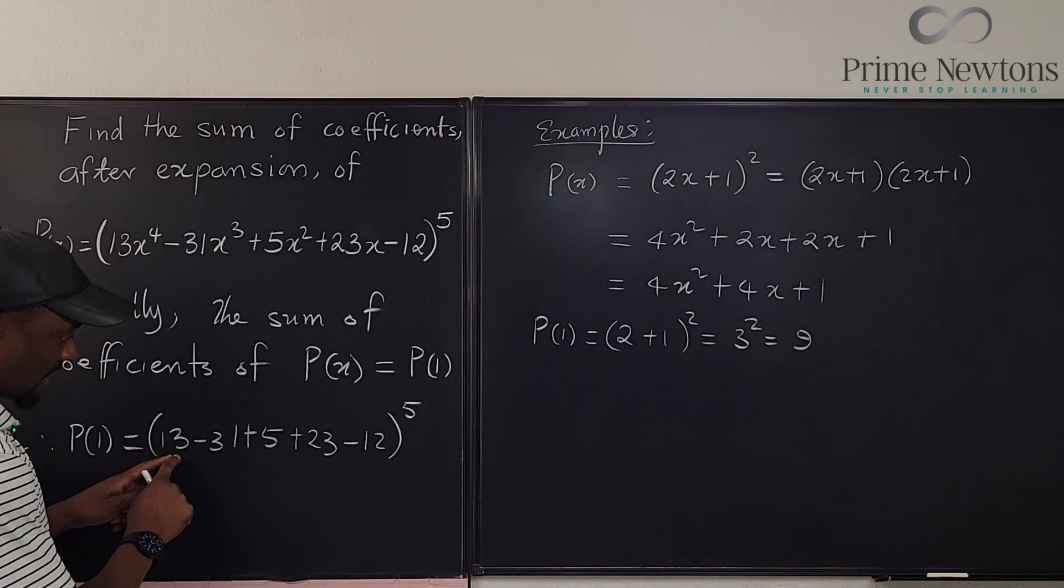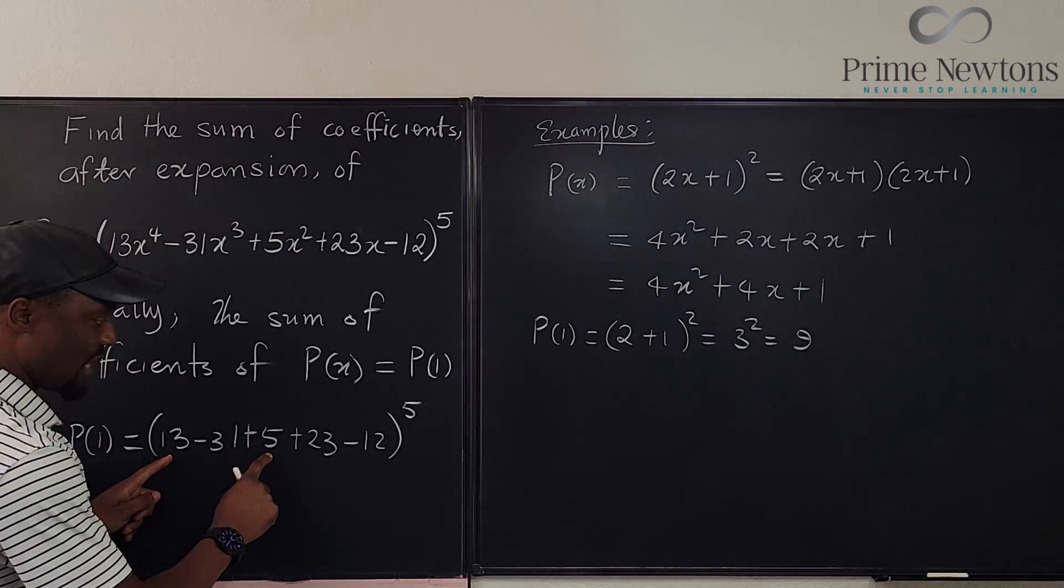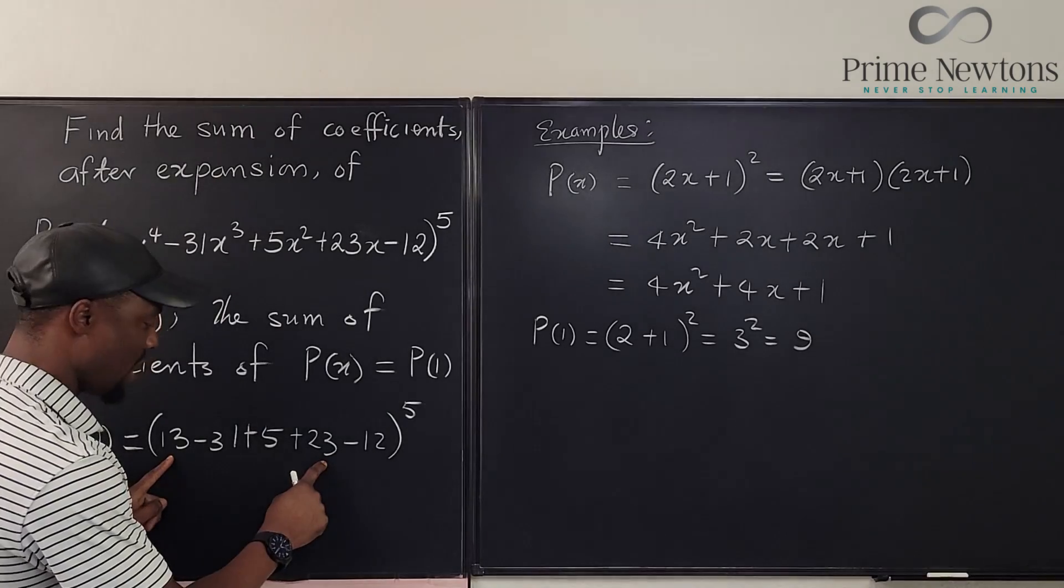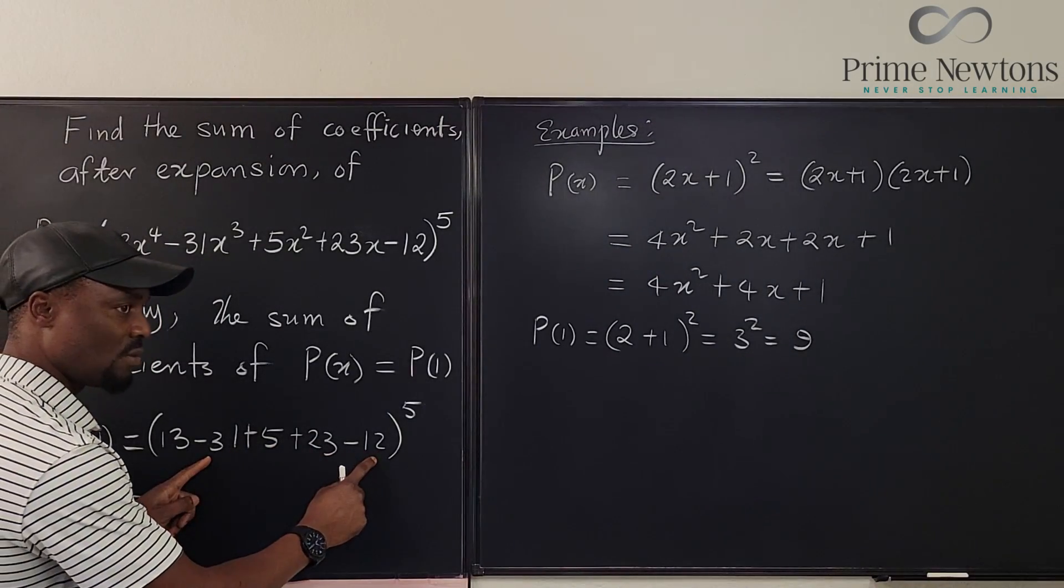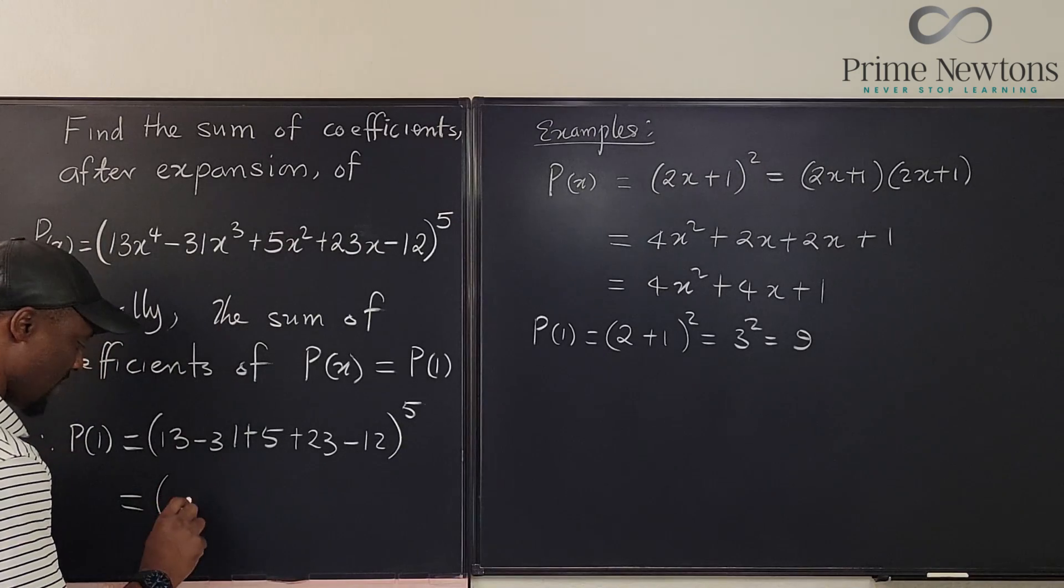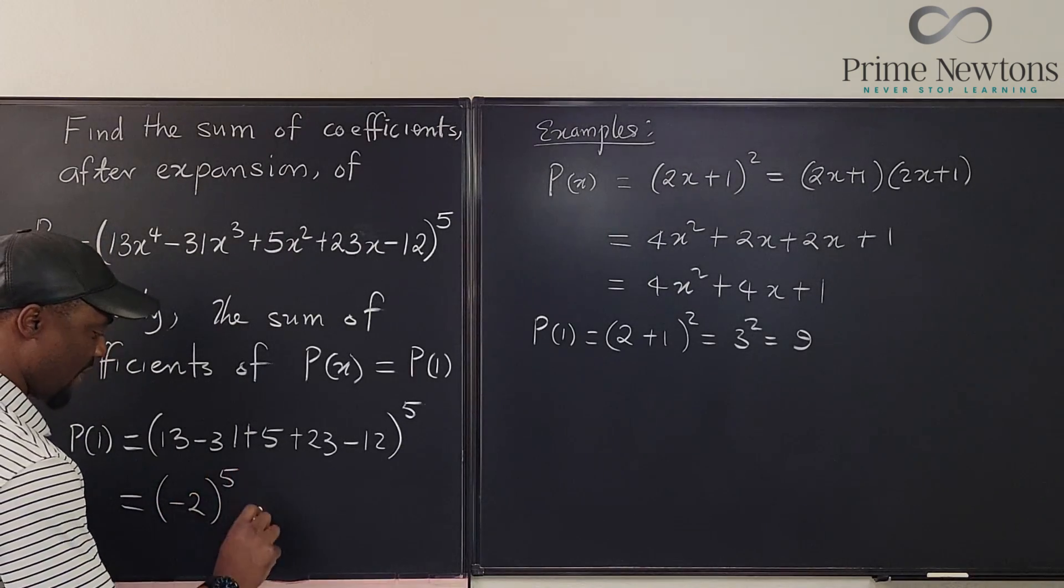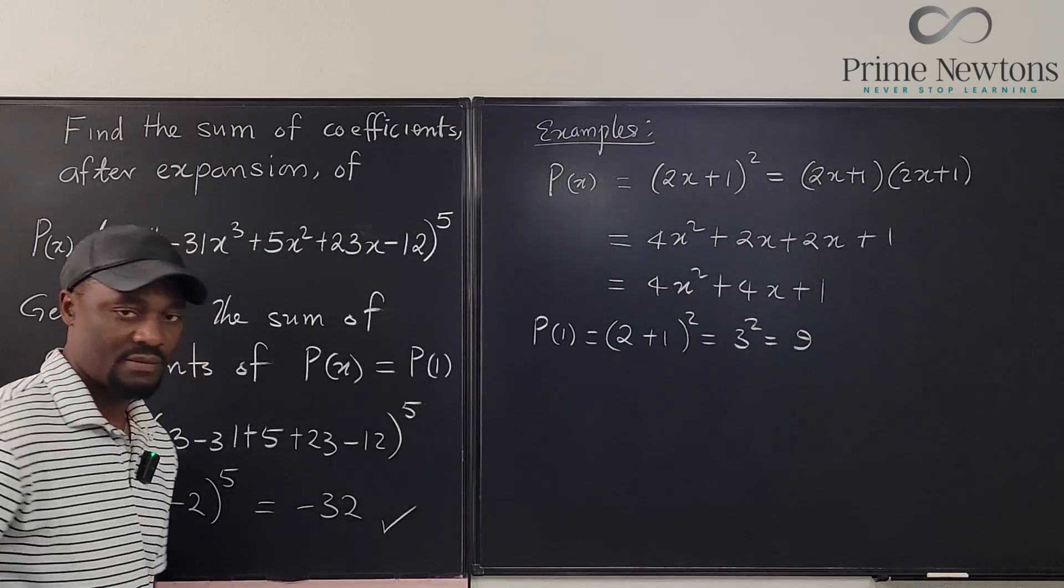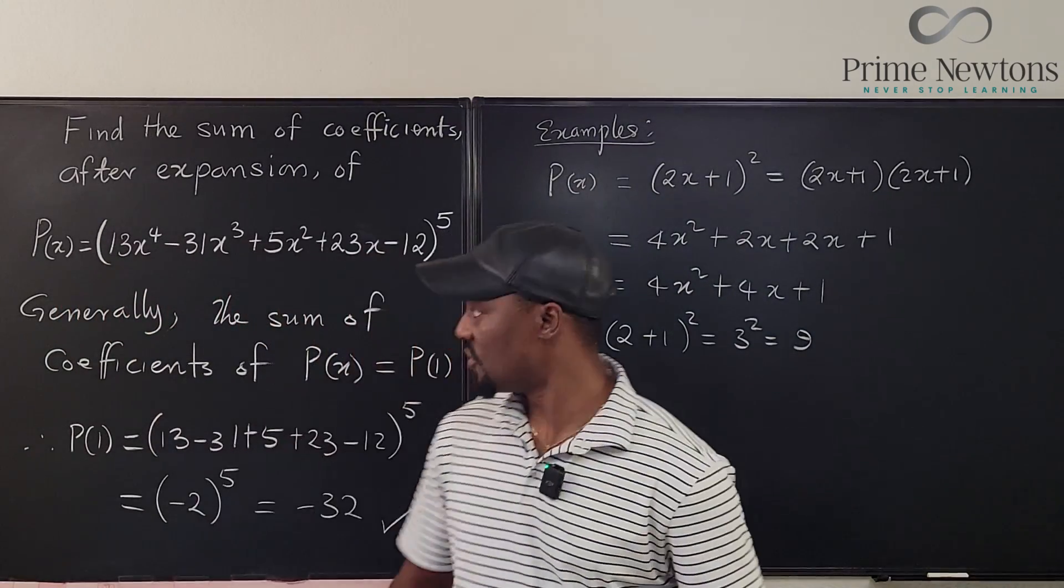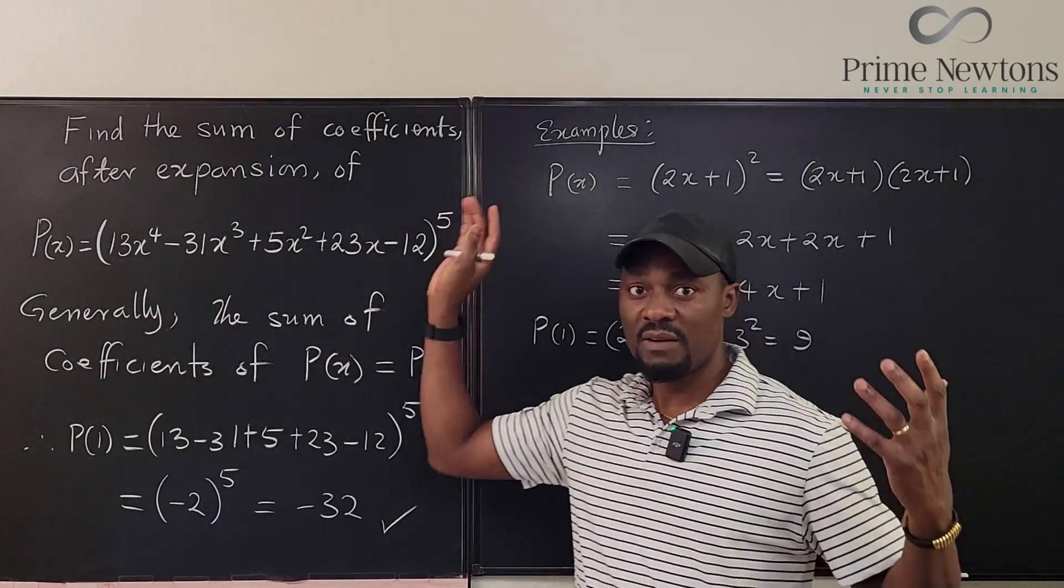Well, that's going to be, 13 plus five is 18. 18 plus 23 is 41. 41 minus 31 is 10. 10 minus 12 is negative two. So it's going to be negative two raised to power five. And that's negative 32. And this is the sum of the coefficients when this is expanded five times.